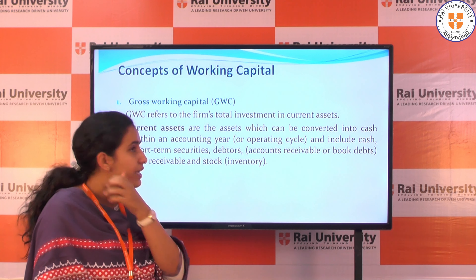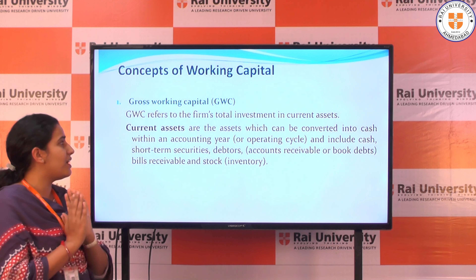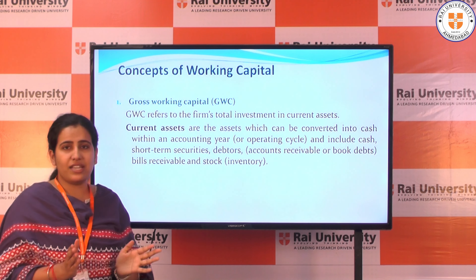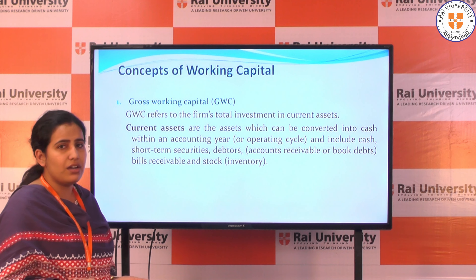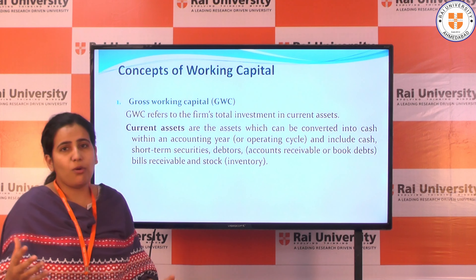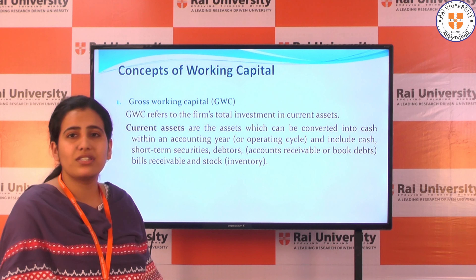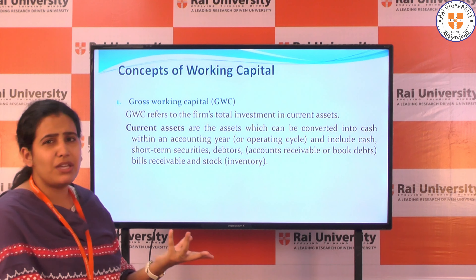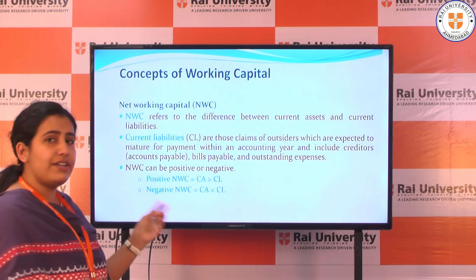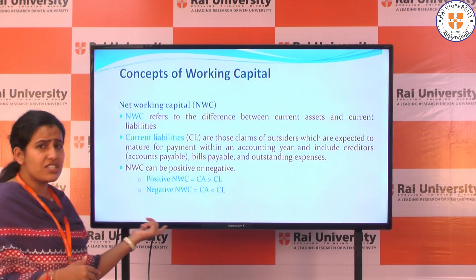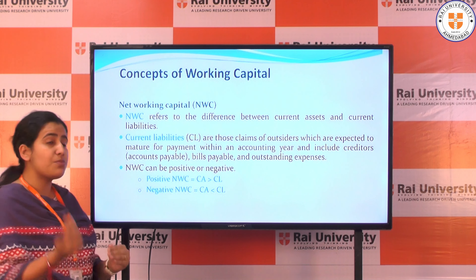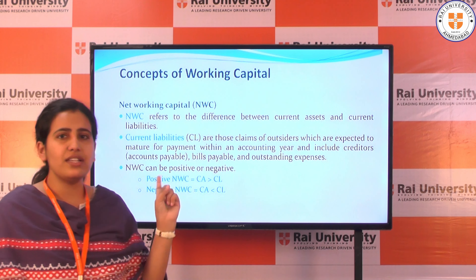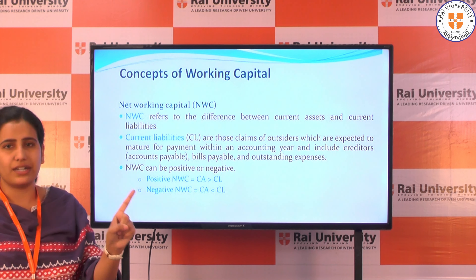Gross working capital refers to the firm's total investment in current assets. Current assets are assets which can be easily converted into cash — the most liquid form of assets. It involves cash, bank, debtors, bills receivable, marketable securities, and inventory. Net working capital is the second type — it is the difference between current assets and current liabilities. So gross working capital is the total investment in current assets, while net working capital is the difference between current liabilities and current assets.